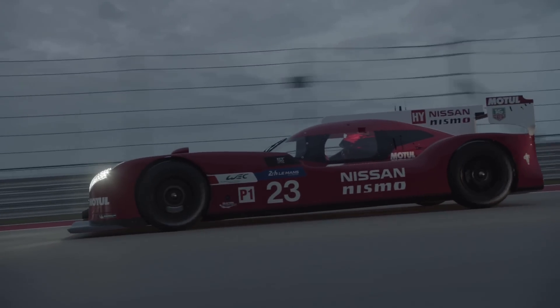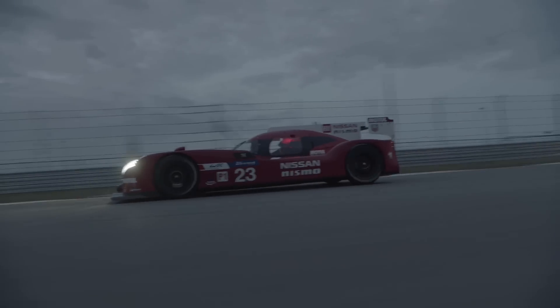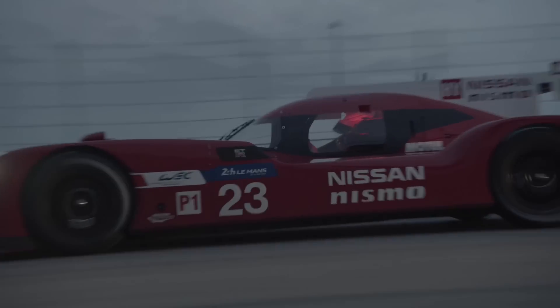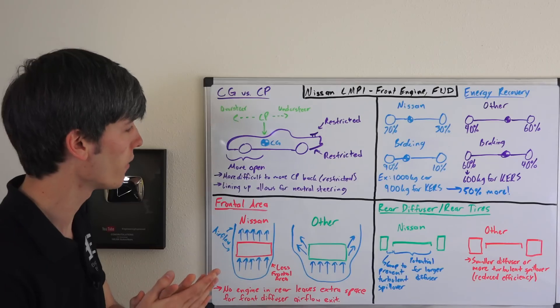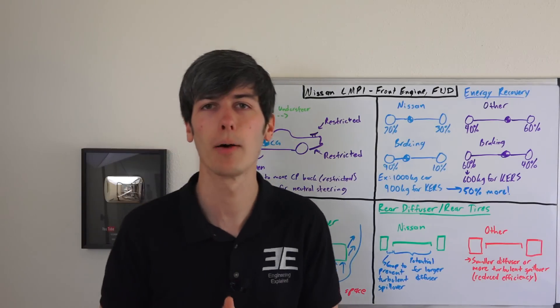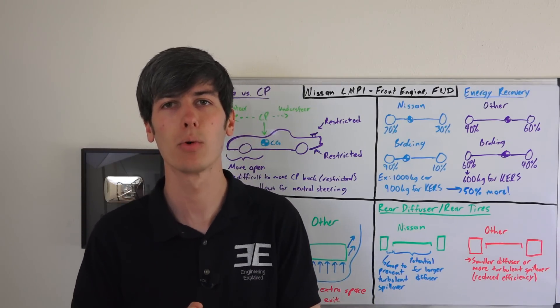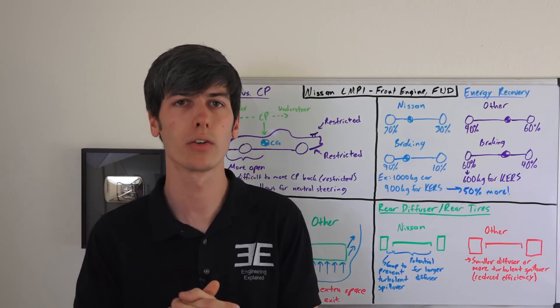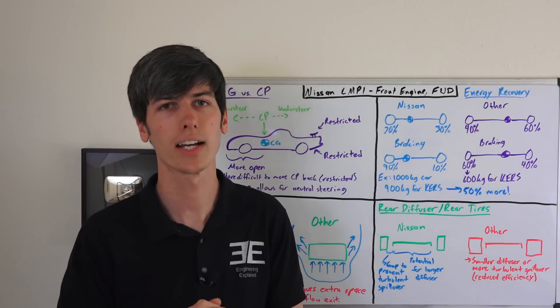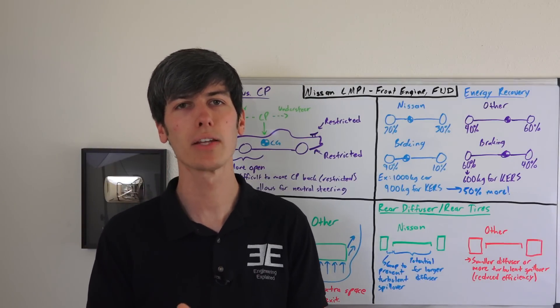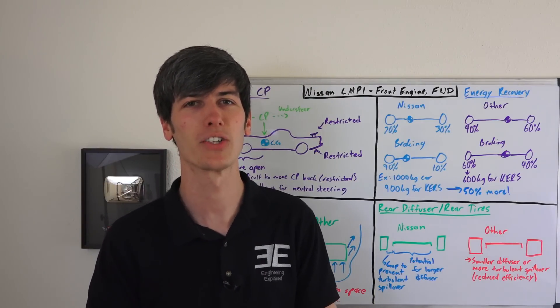So overall, there definitely are some very distinct reasons why Nissan went with this sort of drive train, front engine, front wheel drive. If you are curious about more information on the Nissan LMP1 car, I will include links in the video description to their channel. Head over and check that out. If you have any questions or comments, feel free to leave them below. Thanks for watching!